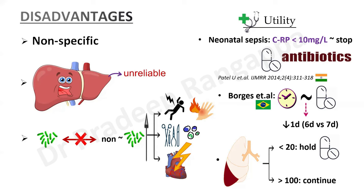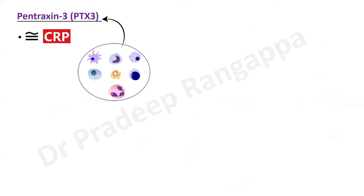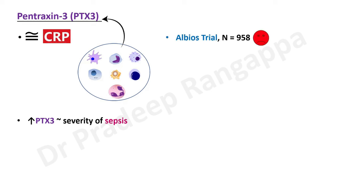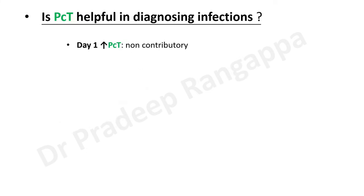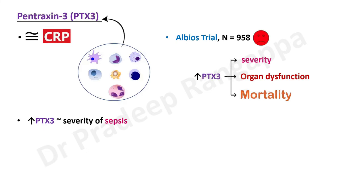Pentraxin 3 is similar to CRP but is produced by all inflammatory cells rather than only by the liver. Increase in Pentraxin 3 has a reasonably good correlation with severity of sepsis. In the ALBIOS trial with 958 patients, increased Pentraxin 3 correlated well with severity of sepsis, organ dysfunction, and mortality. The ease of availability is still not there for routine use.